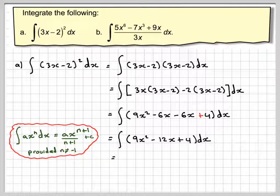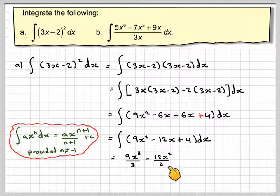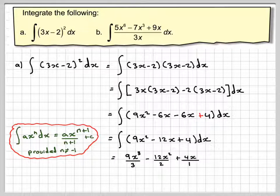So applying that to each of these, we now get 9x³/3 - 12x²/2 + 4x/1 + c.